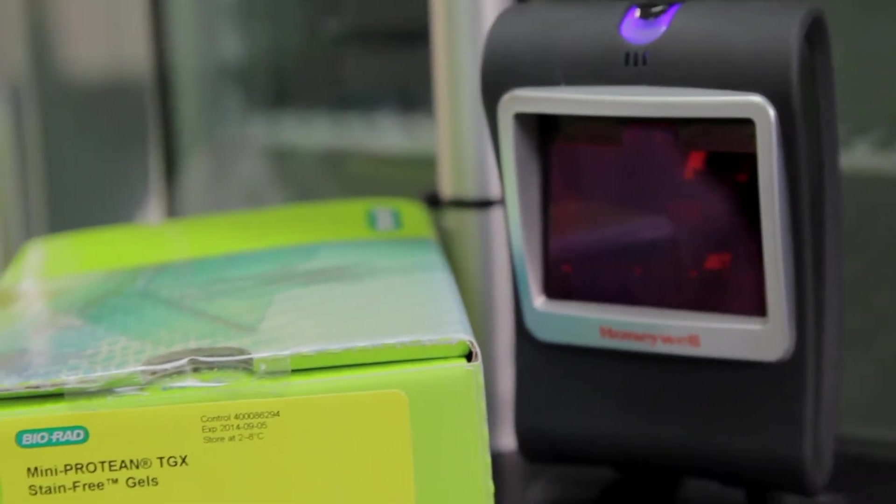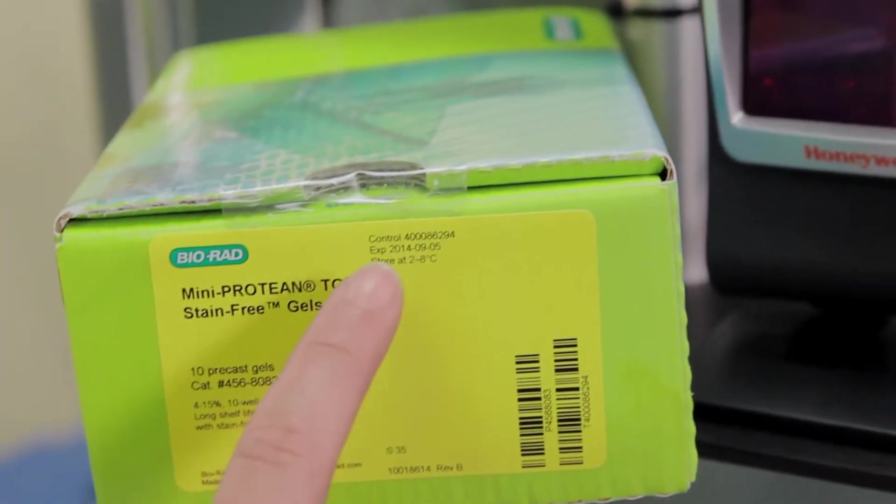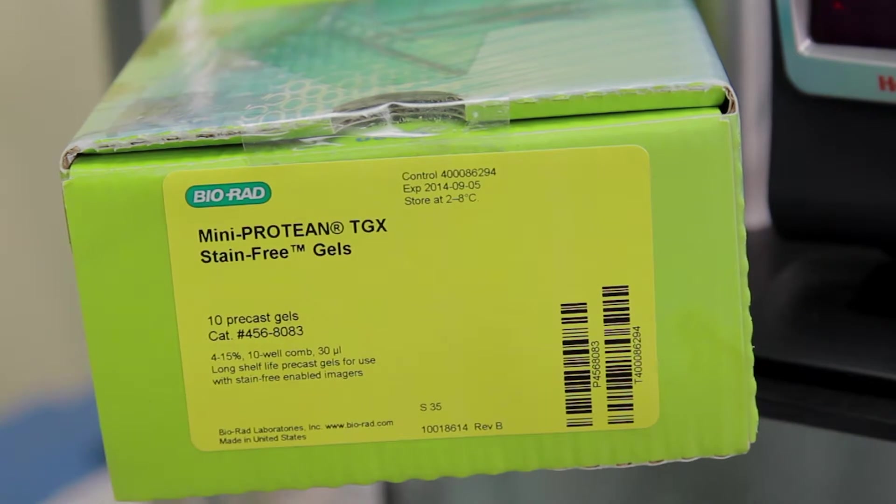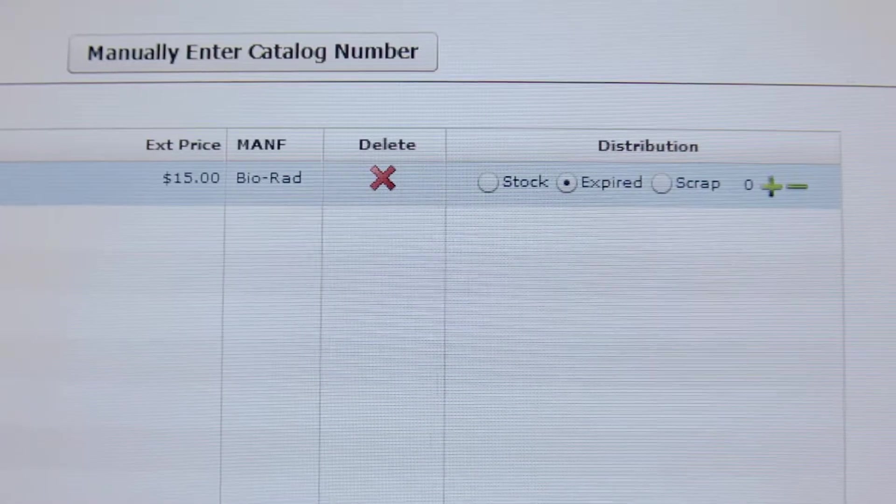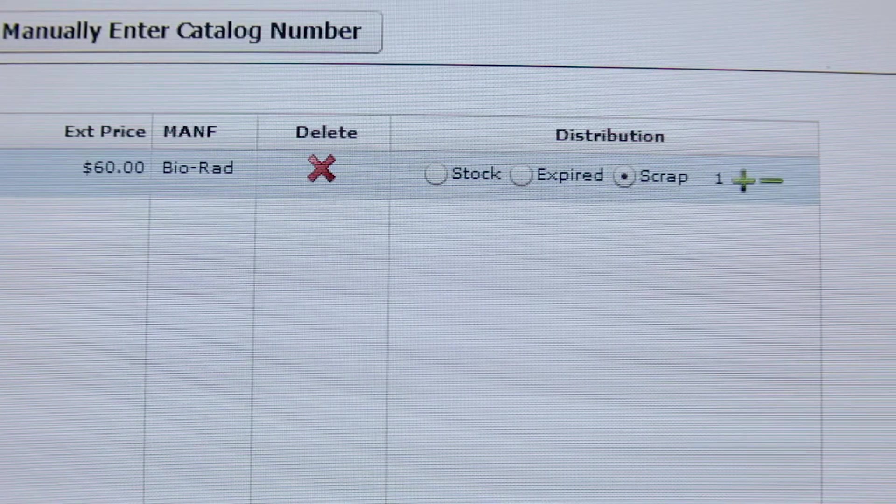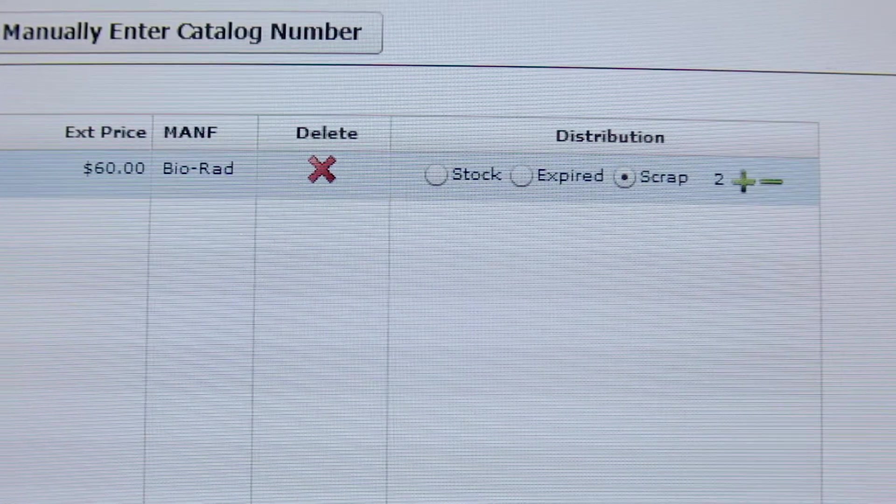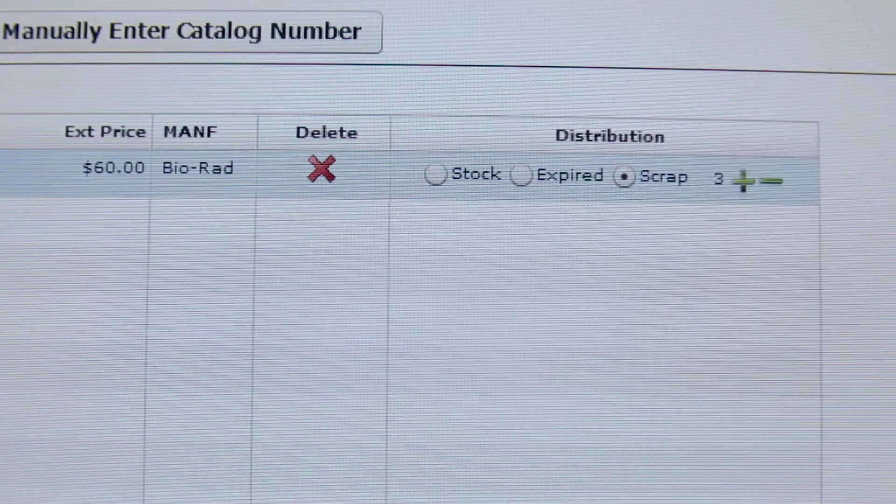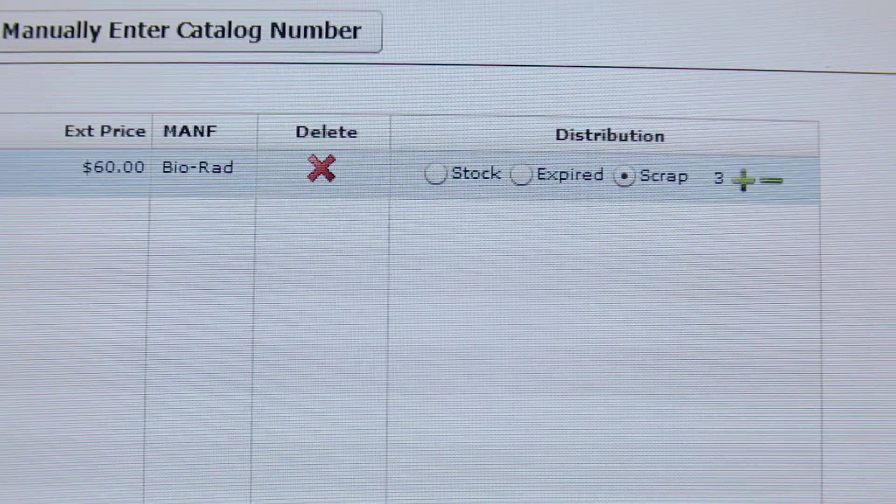Each item should be checked for expiry date or damage. If items are expired, check the expired radio button. If items are damaged, check the scrap radio button and use the plus and minus buttons to increase and decrease the quantity scrapped.